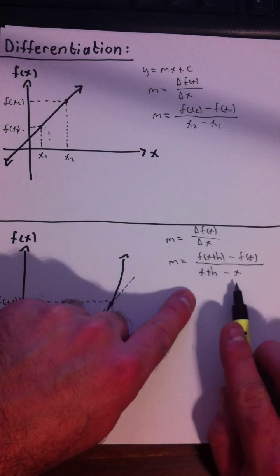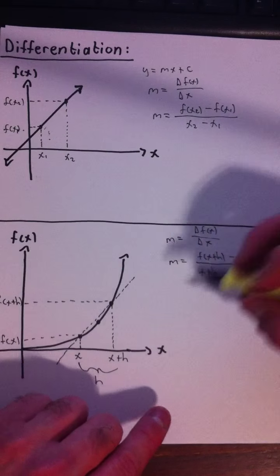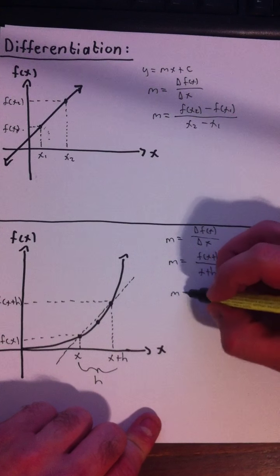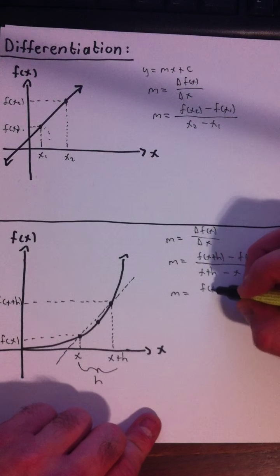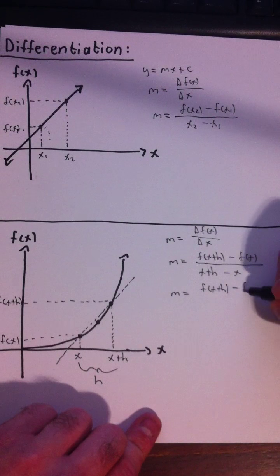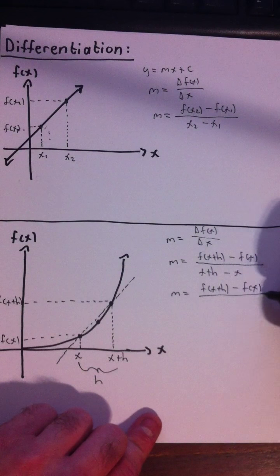Now we see x minus x, that cancels out, that's equal to zero. So all we're left with is f of x plus h minus f of x over h.